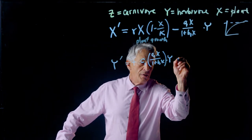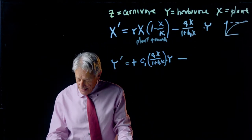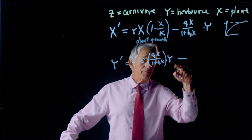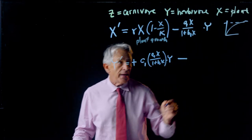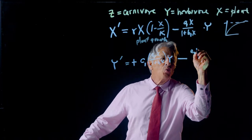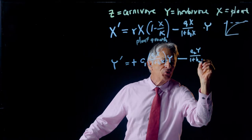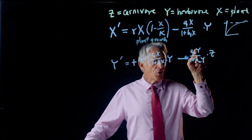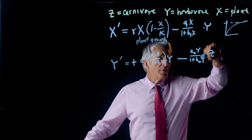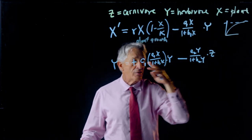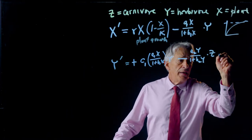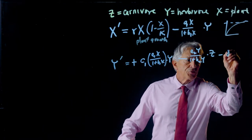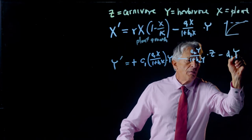But now the herbivores get eaten also. And they get eaten by the carnivores. And so the carnivores are going to be eating them in a saturating way. And we're going to call that function A2Y over 1 plus B2Y. And that's, of course, going to be times Z. Because these are the carnivores meeting the herbivores and eating whatever they can up to their saturation. And then we're going to add a natural death term to the herbivores. And we are going to use the natural death rate D1. So that's D1Y.